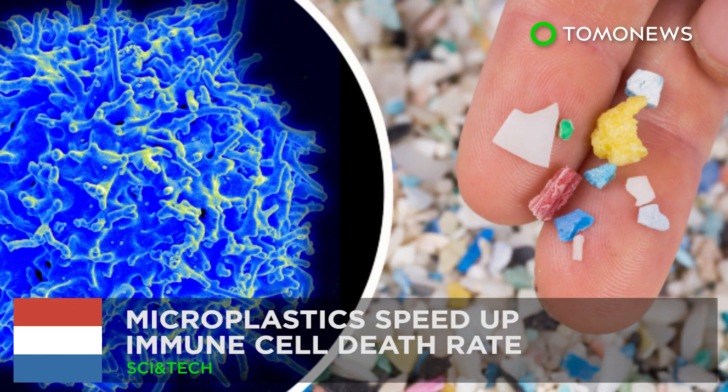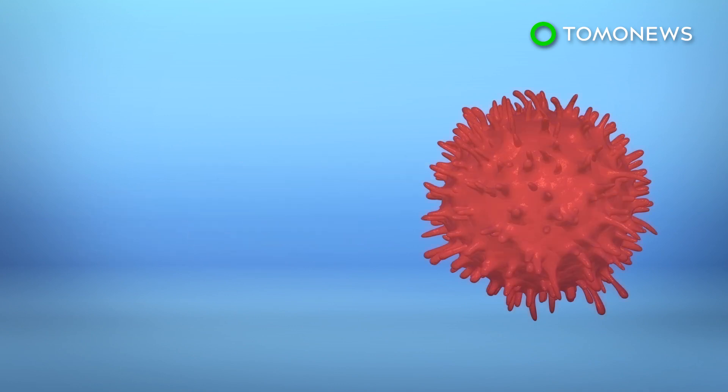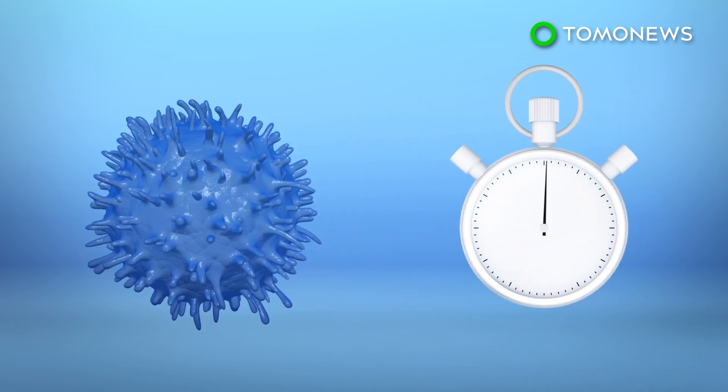Microplastics Speed Up Immune Cell Death Rate. New research from the University Medical Center Utrecht has found that immune cells that target microplastics die three times faster than cells that aren't exposed to microplastics.